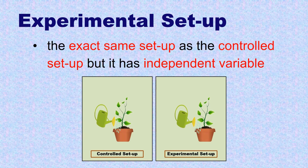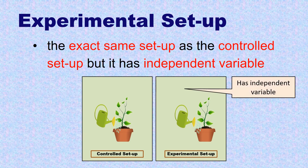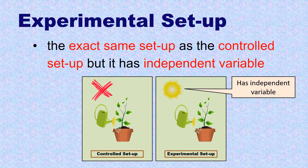The only difference is that the Experimental Setup has an independent variable, which is the sunlight, while the Controlled Setup has no independent variable.